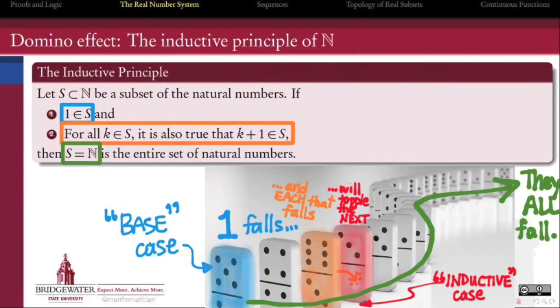It's like knocking over an infinite set of dominoes by first making sure that the first one falls, we often call that the base case, and then making sure that each one that falls also topples its neighbor, we call that the inductive case.